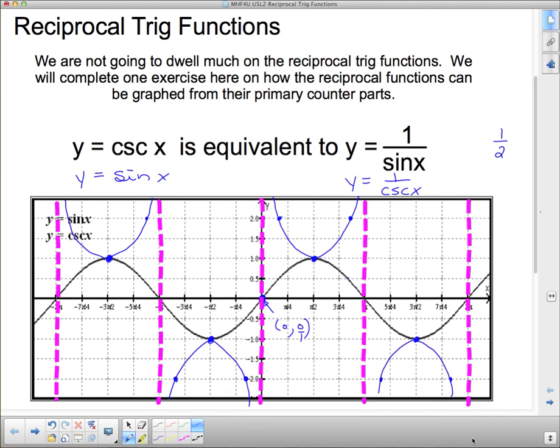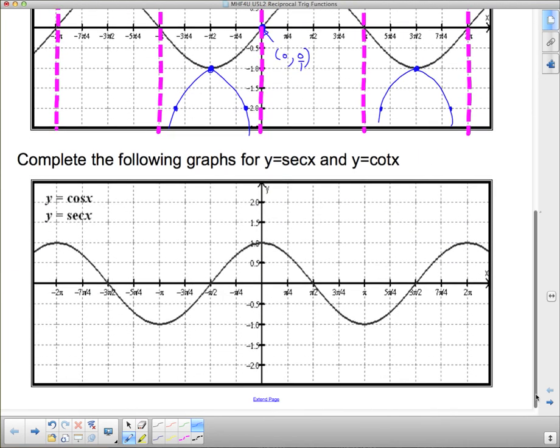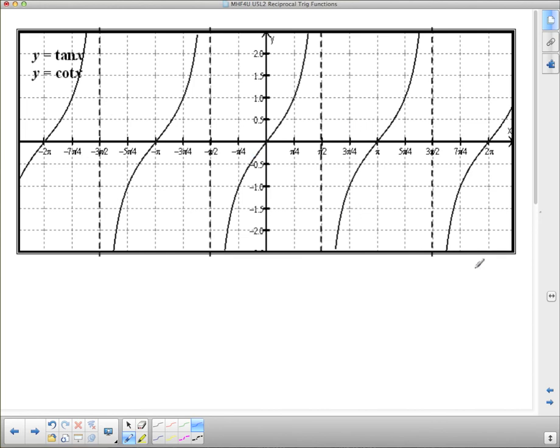Okay. So back to this, the reciprocal trig functions, what I want you to do now is take a look. This is secant. I want you to repeat the process for secant and put all of your, do the same thing that I did up here. And then I want you to try and do it for cotangent on this one here as well. And then you have a couple of questions to do here. And that's it.